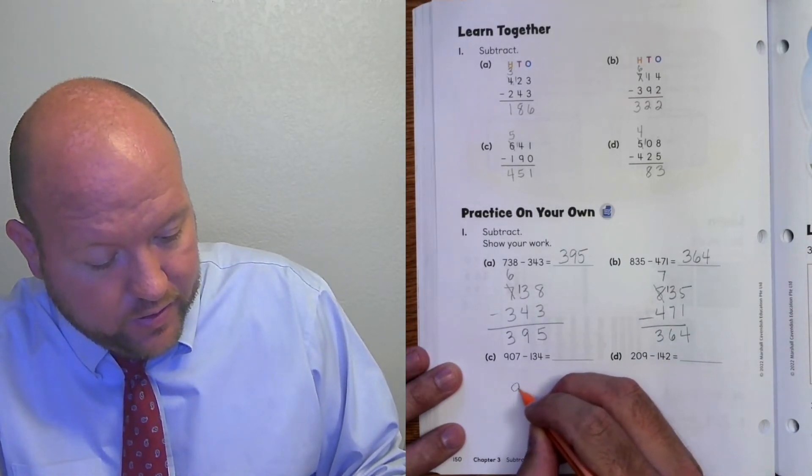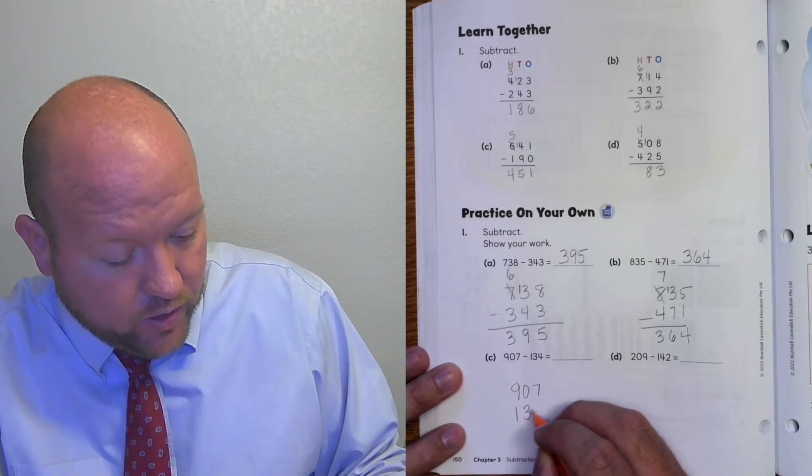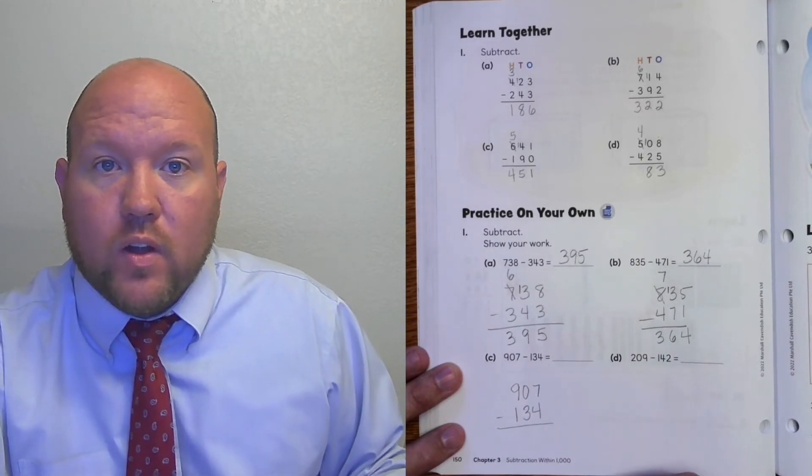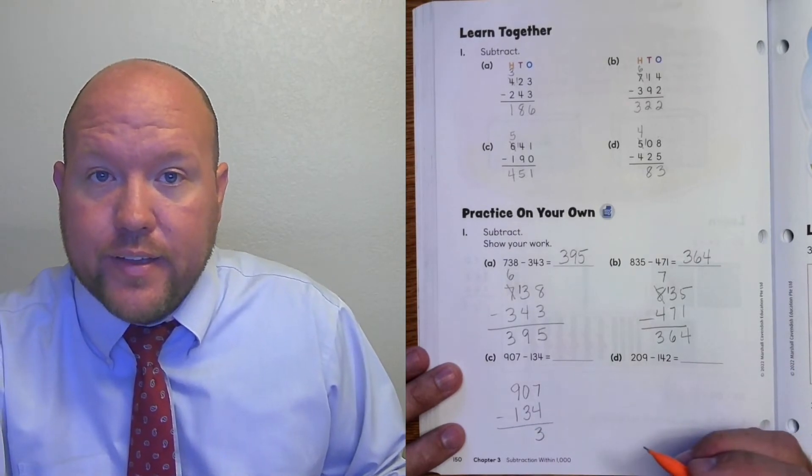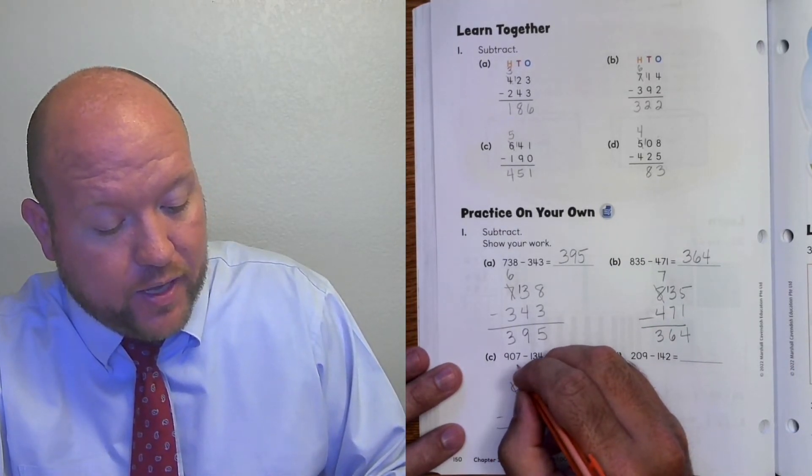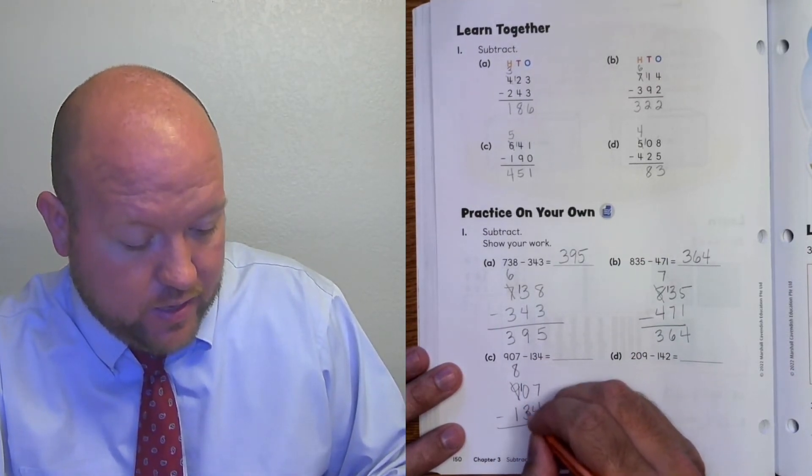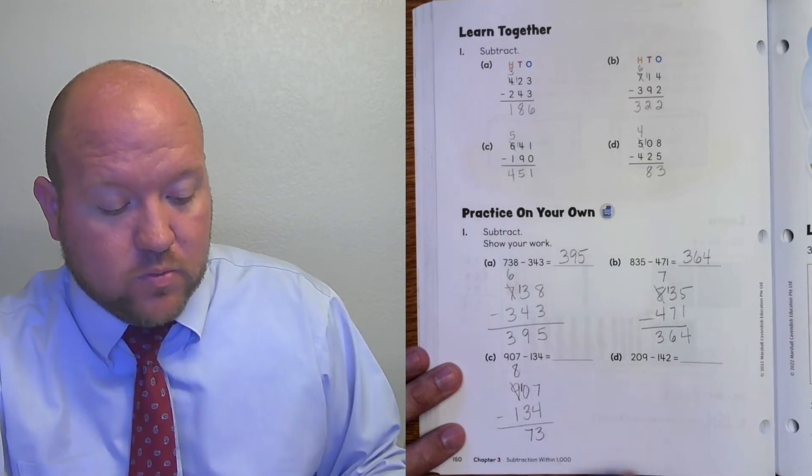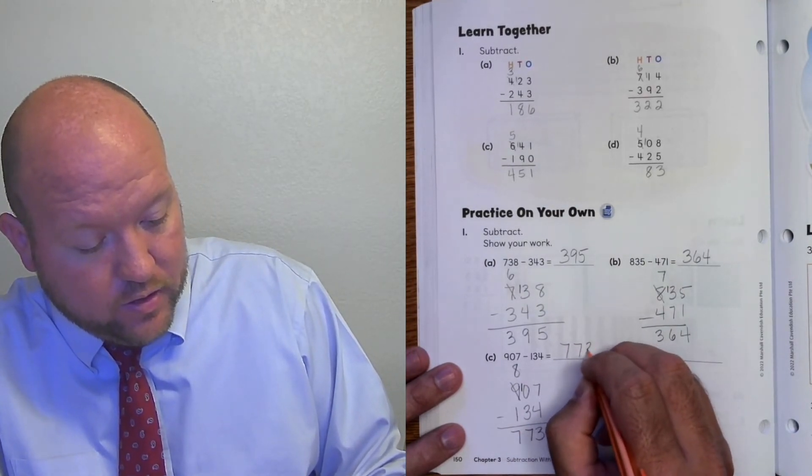Next we have 907 minus 134. 7 minus 4 is 3. 0 minus 3... Yeah. You need to rename. The 9 becomes an 8. And the 0 becomes a 10. 10 minus 3 is 7. And 8 minus 1 is 7. The answer is 773.